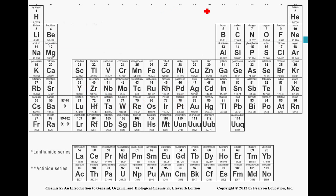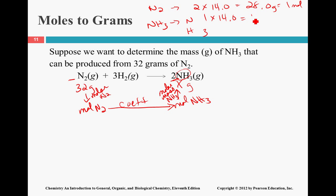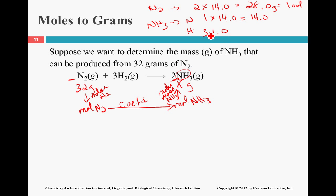N2 is two times nitrogen. Looking at the periodic table, nitrogen is 14.0, which gives us 28.0 grams equal to one mole. For NH3, which is nitrogen and hydrogen — one nitrogen and three hydrogen — nitrogen is 14.0 and hydrogen is 1.0. Adding those together gives us 17 grams equal to one mole. Now we have the molar masses and the coefficients, so we can actually do the problem.